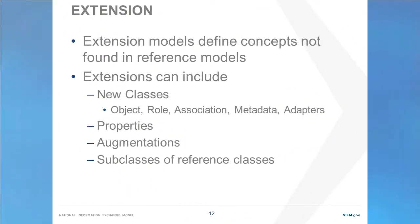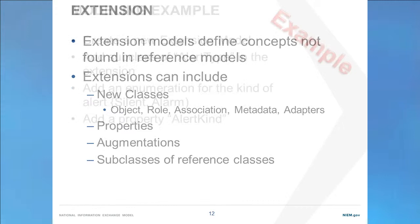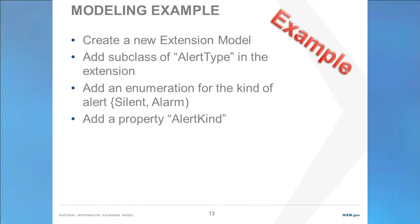Extension models define new concepts not found in the reference models. These can be new classes such as object types, roles, associations, metadata, or adapters; new properties; augmentations; and new classes may or may not subclass concepts found in the reference models. We'll create a new extension model for alerts, add a subclass of alert type in the extension, add a new enumeration for the kind of alert — whether it's silent or an alarm — and then add an alert kind property to alert type.